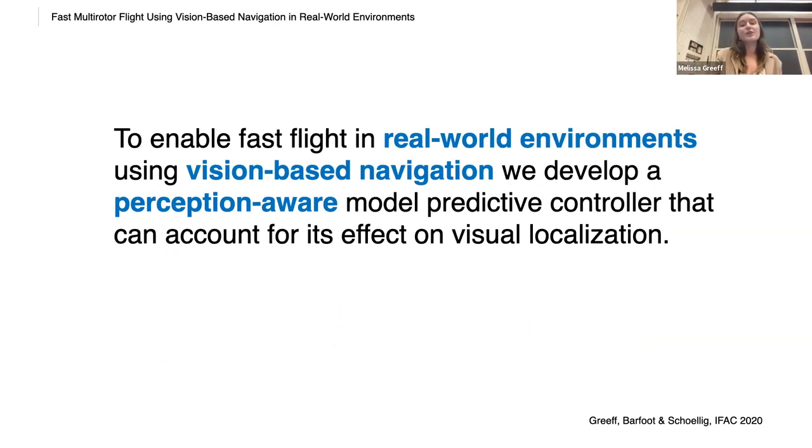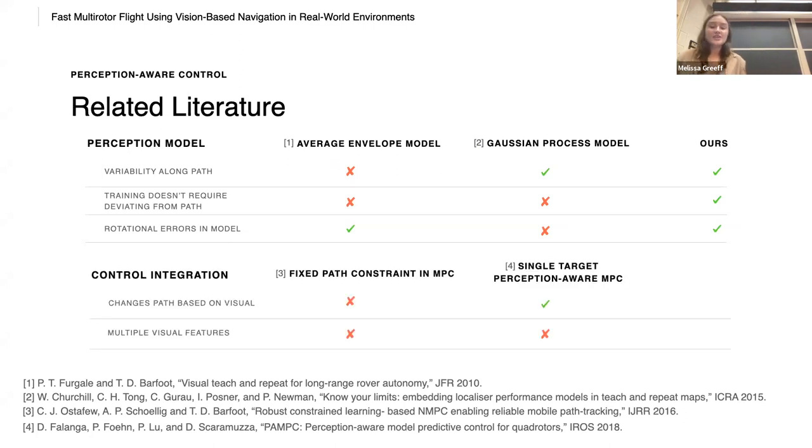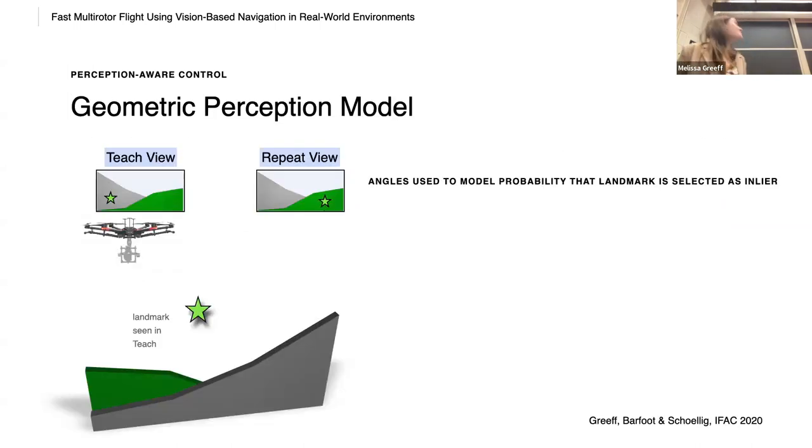So to enable fast flight in real-world environments using vision-based navigation, we develop a perception-aware model predictive controller that can account for its effect on visual localization. Our proposed approach has a few novel contributions. Firstly, the perception model varies along the path. It doesn't require training by deviating from the path. And it considers rotational errors. On the control integration side, the path is adapted based on the visual information, and we can account for multiple visual features.